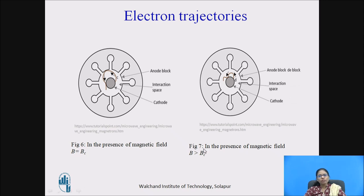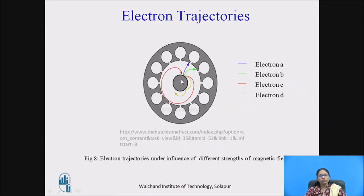If we increase the magnetic flux density beyond Bc (B greater than Bc), the electron curvature is more and it bends back early to the cathode — these electrons cause back-hitting and are of no use for oscillation. To summarize the electron trajectories: straight path when B = 0; curved path when B less than Bc; the red-colored path when B equals Bc; and back-hitting when B greater than Bc. We want most electrons to follow the red-colored path at B = Bc.